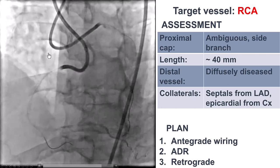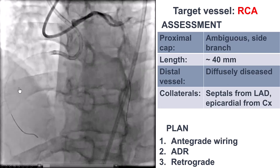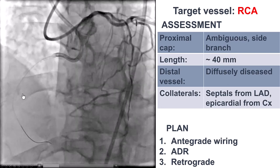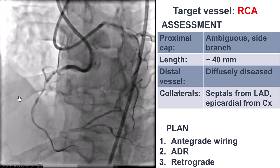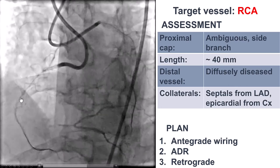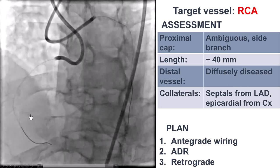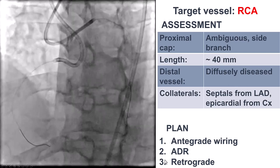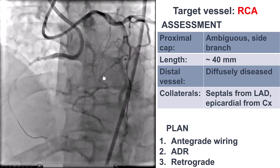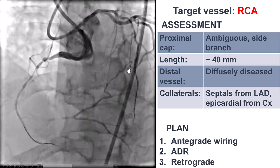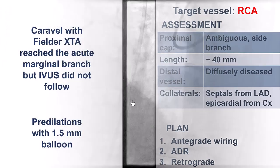Our plan was to start with antegrade using IVUS guidance to clarify the proximal cap ambiguity. If that didn't work, use ADR. If that didn't work, try to go retrograde through the septal. As a last resort, try the epicardial.